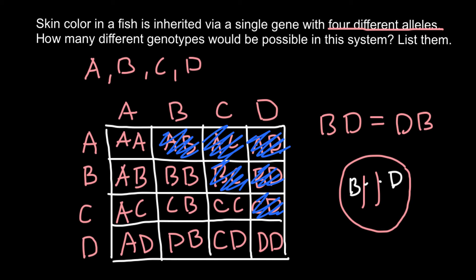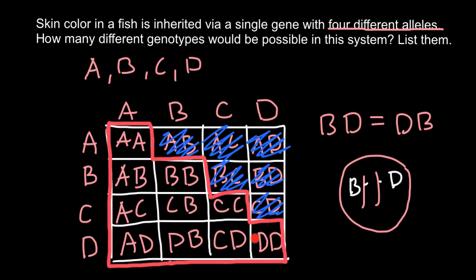We need to leave only those combinations that are unique. And we have 10 such combinations: 1, 2, 3, 4, 5, 6, 7, 8, 9, and 10. So the answer is 10 unique genotypes when we have 4 alleles.